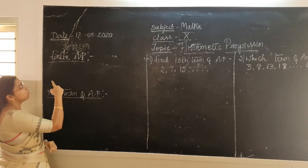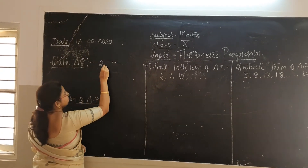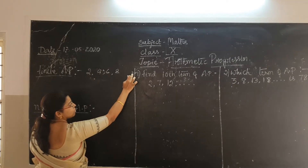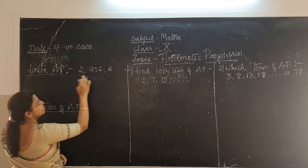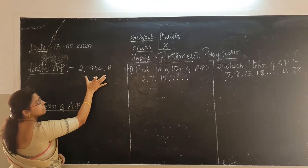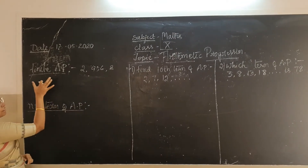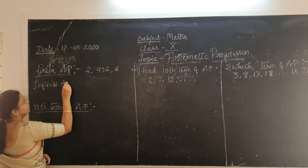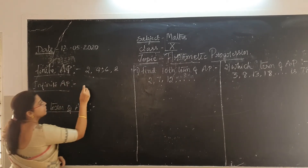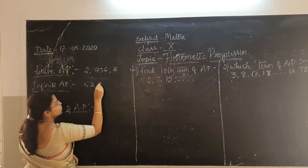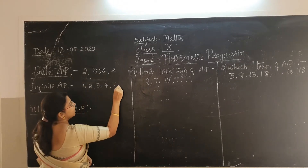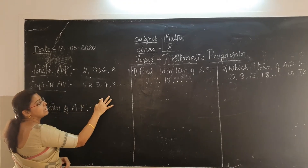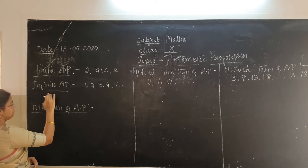Next, what is a finite AP? Consider 2, 4, 6, 8 — there are only 4 terms with no dots indicating it goes on endlessly. The number of terms is definite, so we call this a finite AP. In contrast, natural numbers starting from 1 are endless — the number of terms is not definite, so these are called an infinite AP.